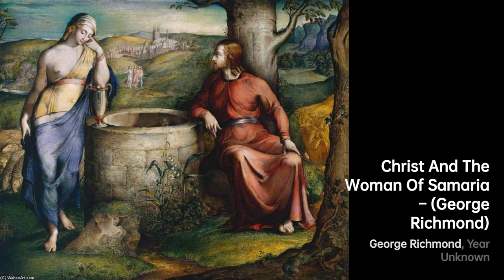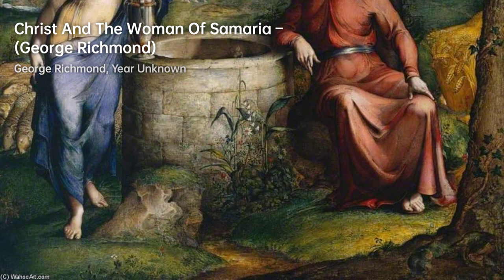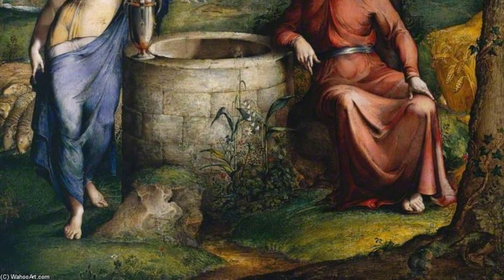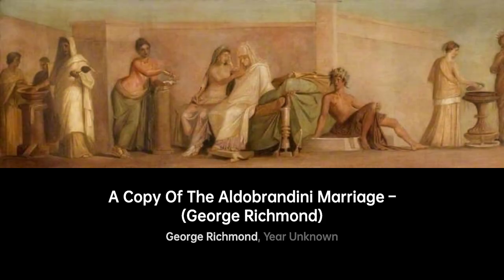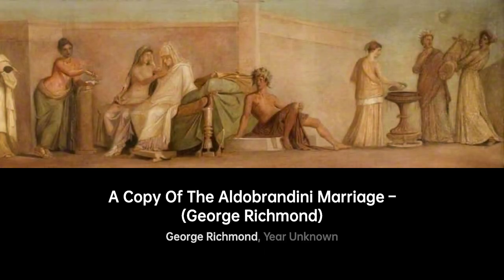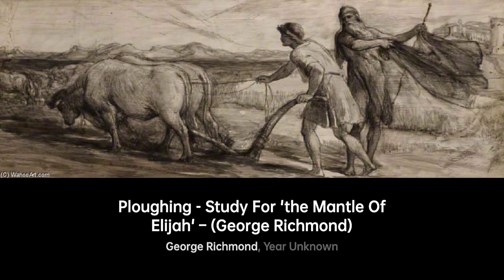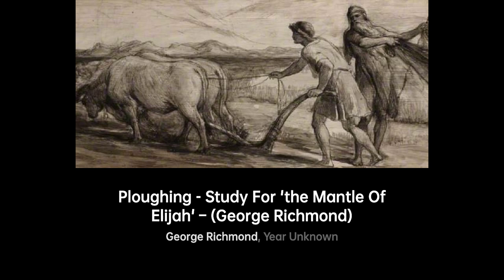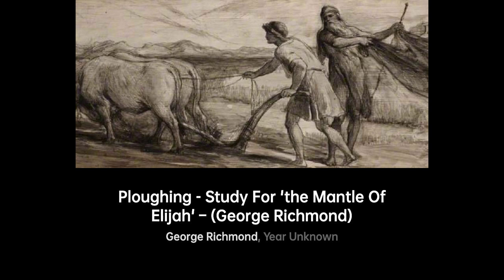In conclusion, George Richmond, an English painter and portraitist, left a lasting impact on the art world through his exceptional talent and diverse interests. His ability to capture the essence and character of his subjects in his portraits showcased his skill and attention to detail. Richmond's association with the Ancients and his embrace of evolving art movements demonstrated his adaptability and creativity. Furthermore, his love for cricket highlighted his well-rounded life and passion for different pursuits. Throughout his career, Richmond gained recognition and admiration from the art community for his remarkable body of work. His influence extended beyond his own art, inspiring and influencing a generation of painters, including his friend Samuel Palmer. Today, George Richmond's legacy lives on as a significant figure in the history of English art.